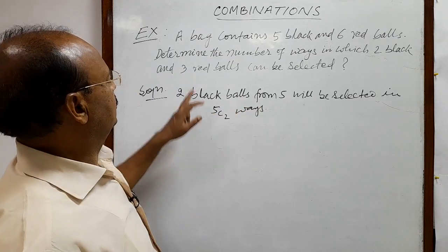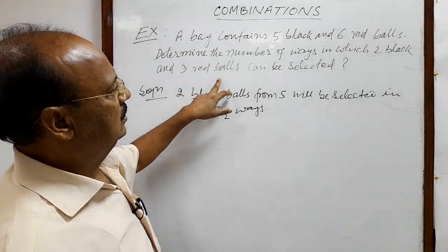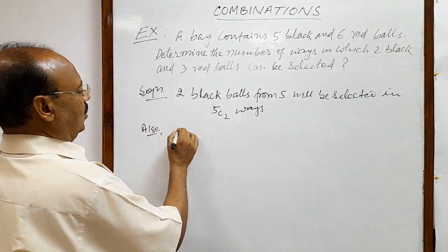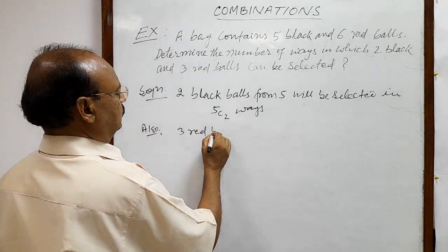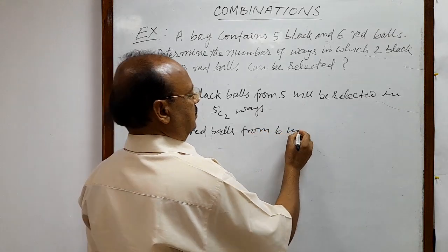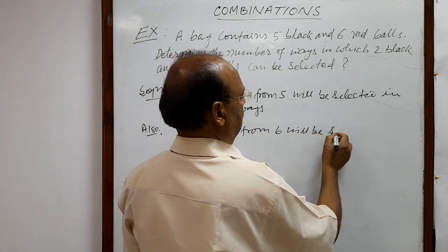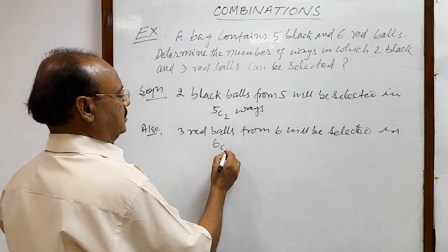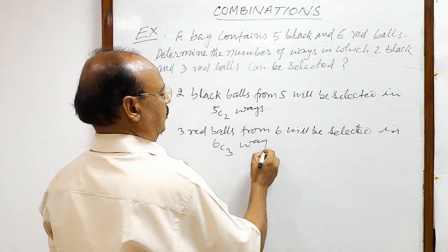Again we have to select three red balls from six red balls. Also, three red balls from six will be selected in how many ways? 6C3 ways.